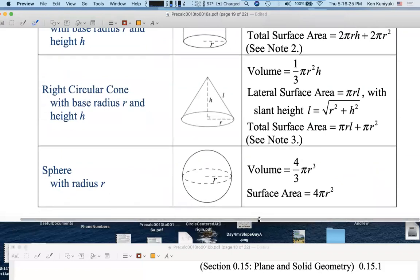Spheres. You got to memorize these. The volume of a sphere, capacity, is four-thirds pi r cubed. Surface area - imagine that you're wrapping up the bowling ball - is four pi r squared.